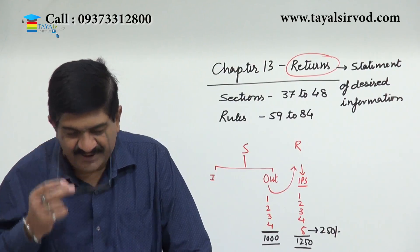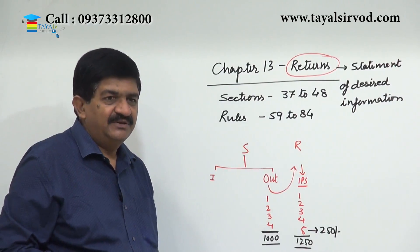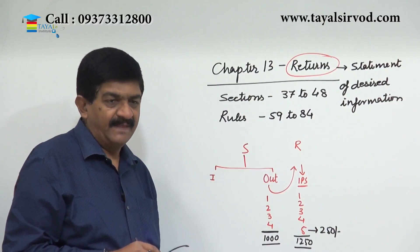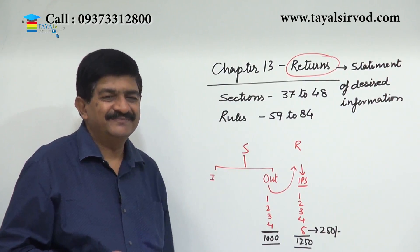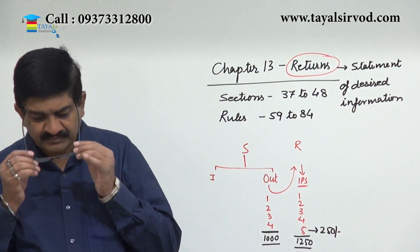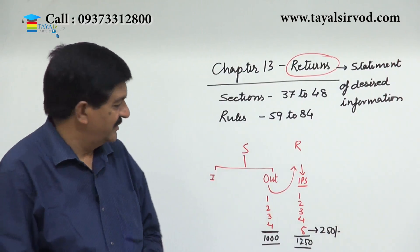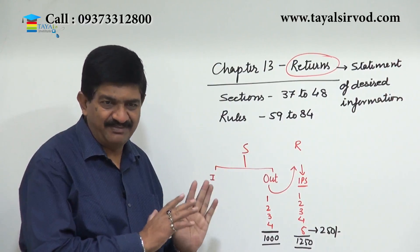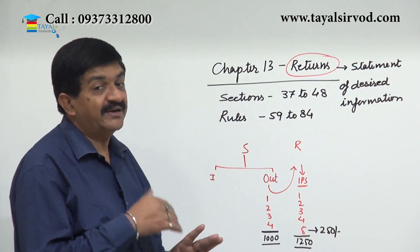Under section 48 there are provisions for certifying certain persons as GST practitioners who will facilitate suppliers to comply with the provisions. There is also information about output supplies, input supplies, and consolidated returns in section 39. The matching concept has also been explained.